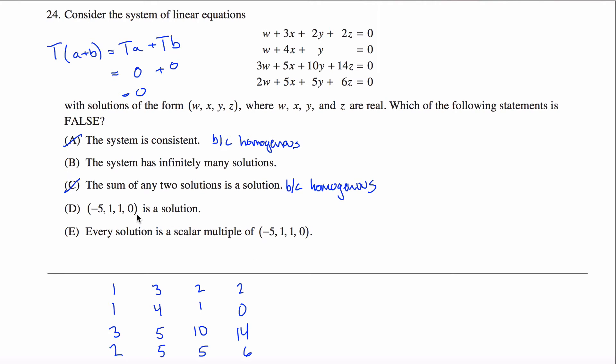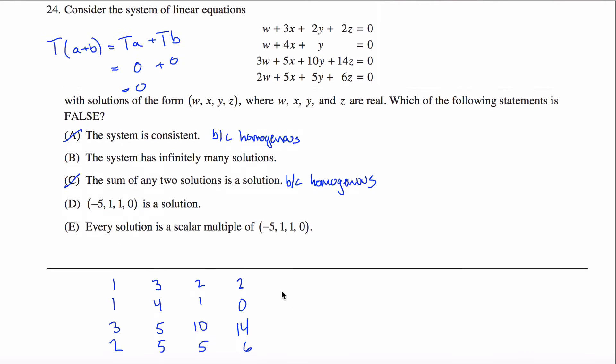Every solution is a scalar multiple of this guy. Well, let's look at that also. So if I have one free variable, then every solution might be a scalar multiple of that guy. But if I have more than one free variable, then that would end up being a false statement. So let's see what happens when I row reduce.